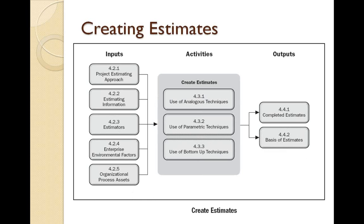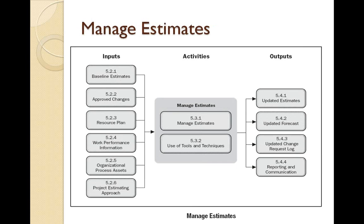The next phase is creating the estimate, where we use the finalized project estimation approach. We use all estimation information — the project requirements document, scope document, risk registers, and all available information. Estimators provide specific estimates. Enterprise environmental factors and organizational process assets are also considered. If the organization is CMMI or ISO certified, its process requirements must be factored in. Estimates fall into three categories: analogous estimates, parametric estimates, or bottom-up estimates. Completed estimates and their basis of estimate are documented for further reference.